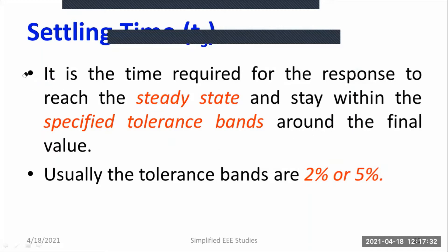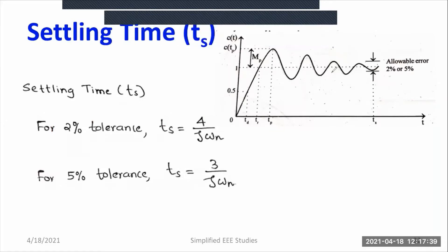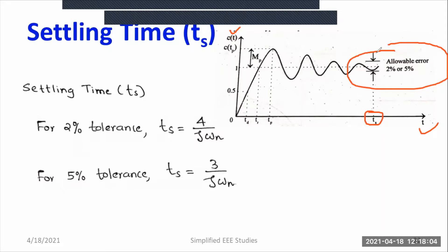I would like to show you the settling time with the help of a second order response curve. This is the second order response curve, typically for an underdamped system. The y-axis shows the response and the x-axis represents time. At the particular time Ts, the response becomes restricted within a particular tolerance band — either 2% or 5%.